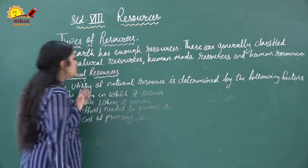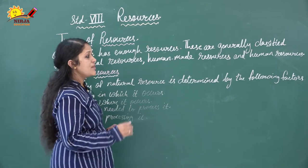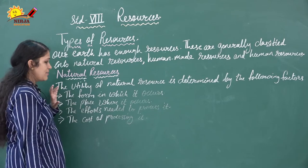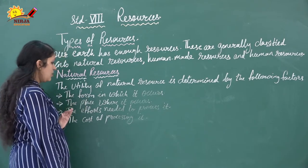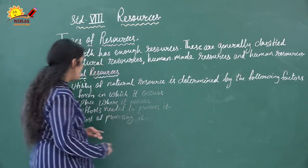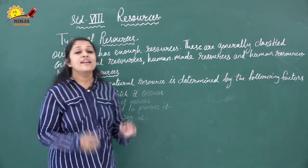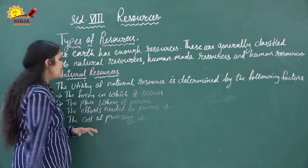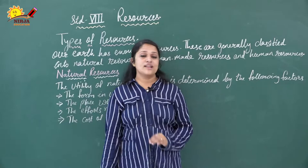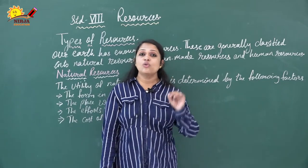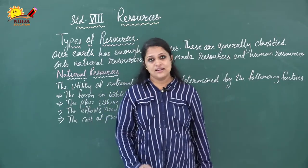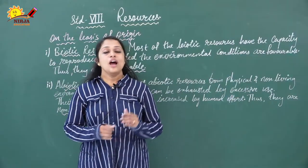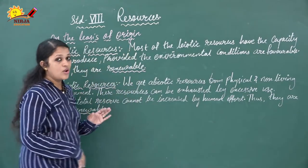The utility of natural resources is determined by: the form in which it occurs, the place where it occurs, the efforts needed to process it, and the cost of processing it. These are all very important factors.